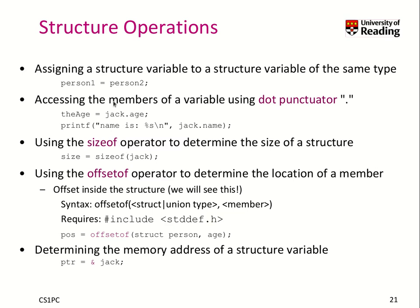What can we do with a struct? We can assign a struct — that's now possible. You can assign person one to person two, which means all the member variables get copied over. We can access the members of a variable using the dot punctuator — it's just a dot. So I can access the age field of a variable of this struct person type by saying Jack.age. You can use it on the left-hand side or on the right-hand side, like here, to print a name. It behaves just as a single variable.